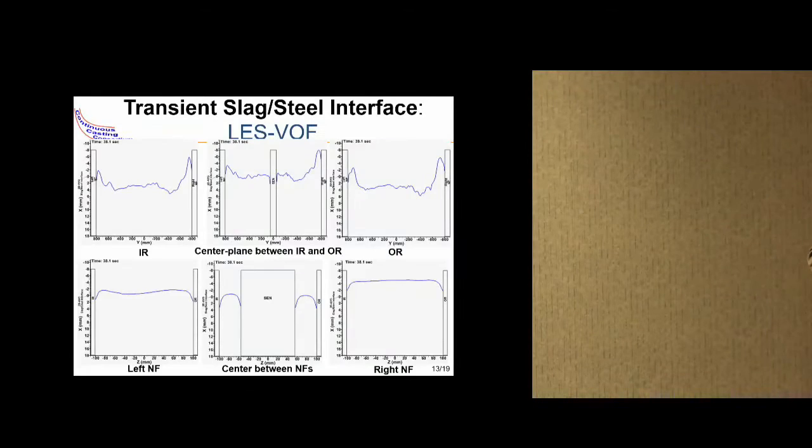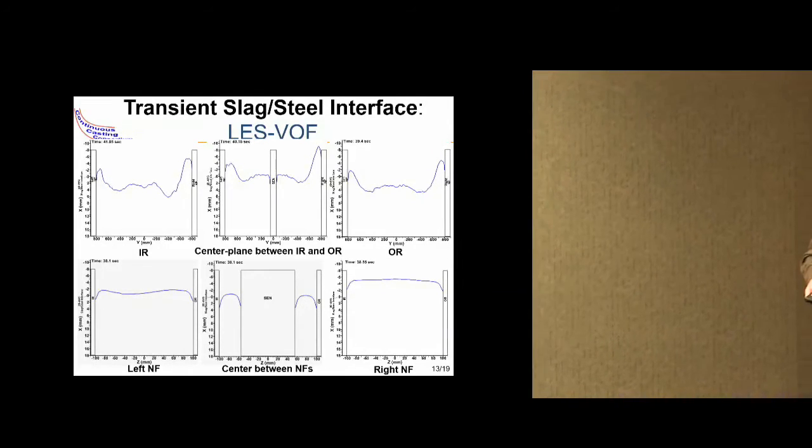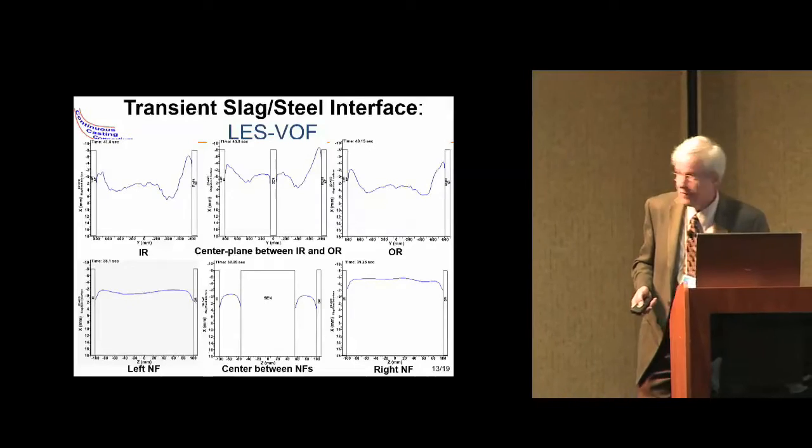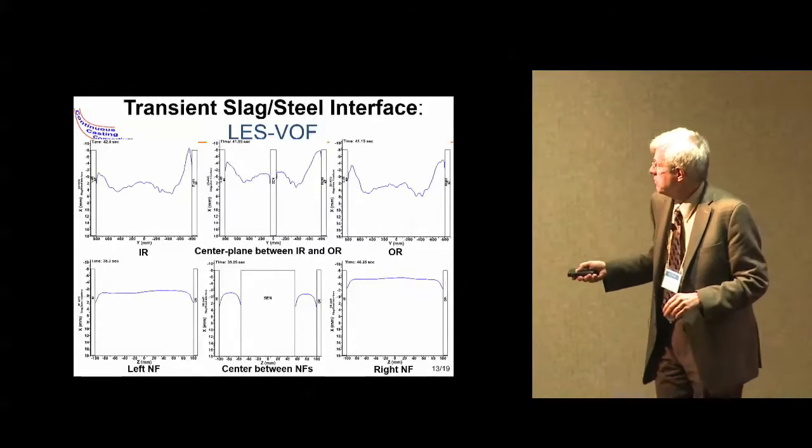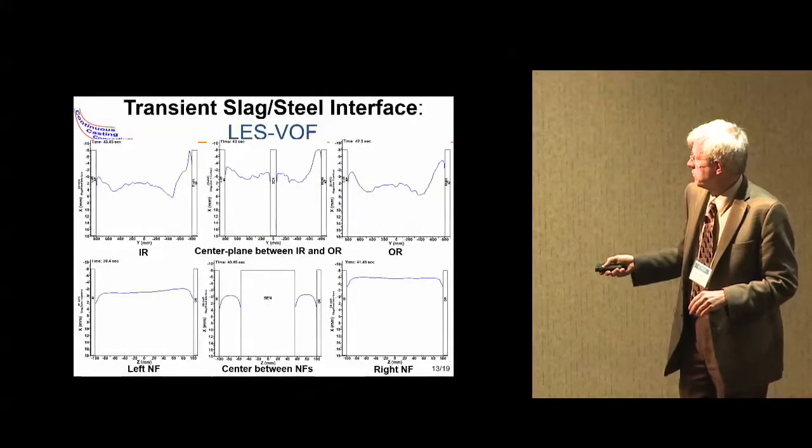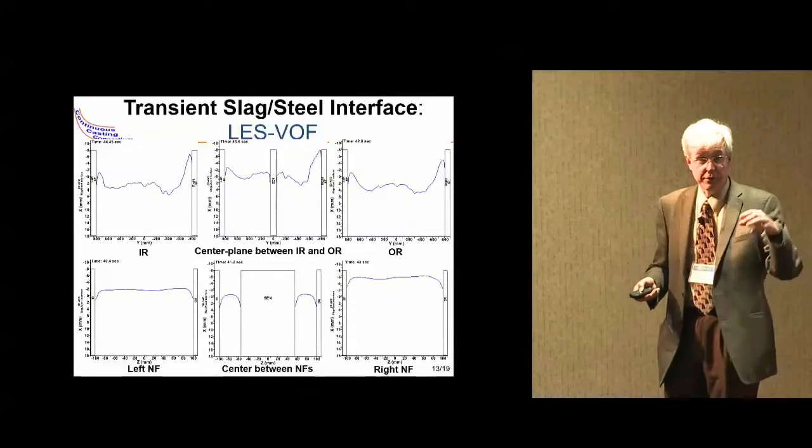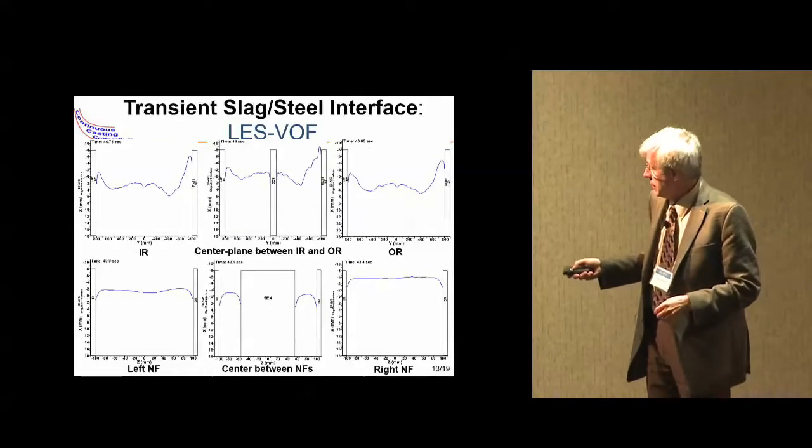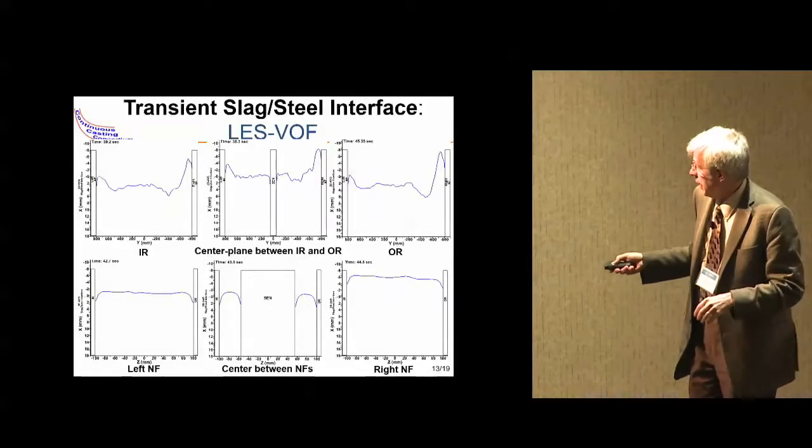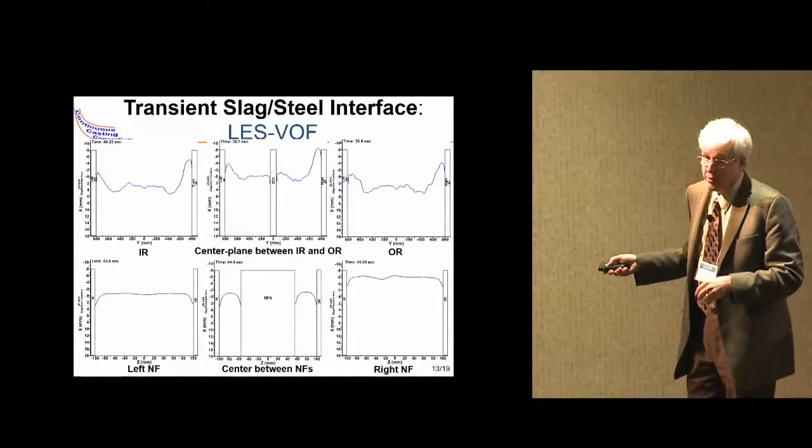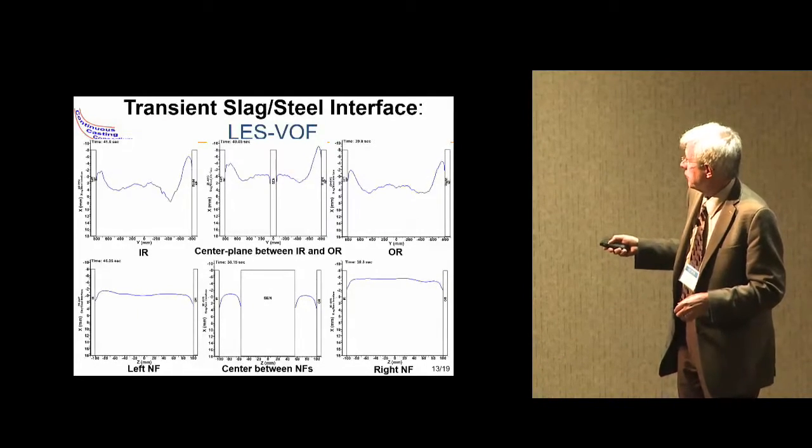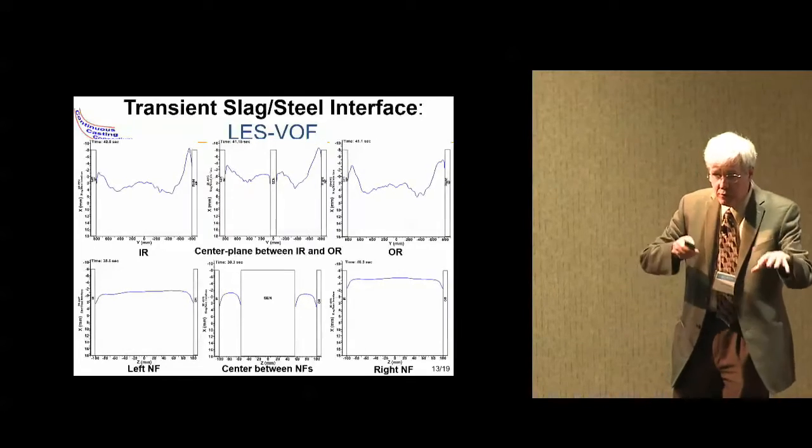One thing we get is the variation of this surface—the interface on top of the molten steel where it touches the slag layer. Notice in between the nozzle there's quite a bit of a meniscus forming due to surface tension between the steel, slag, and mold at that triple point. We also have some time variations—things are always going up and down a little bit.